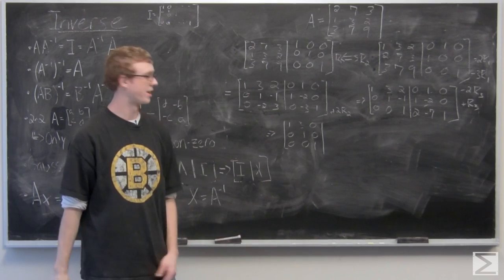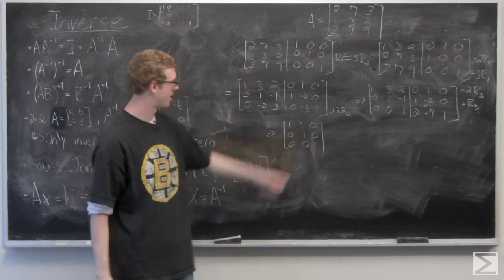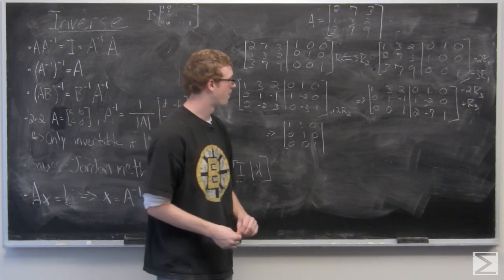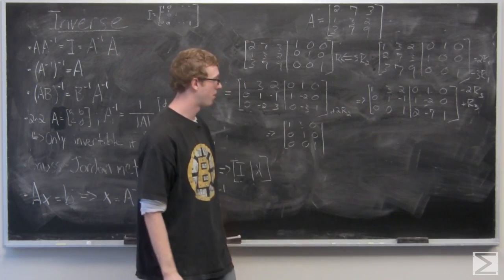So as you can see, we're getting very close to making this the identity matrix. All we're going to have to do is manipulate R1 and R2 a little bit, but let's go ahead and complete writing this matrix.